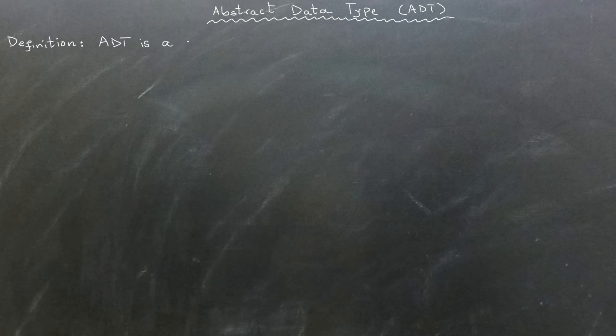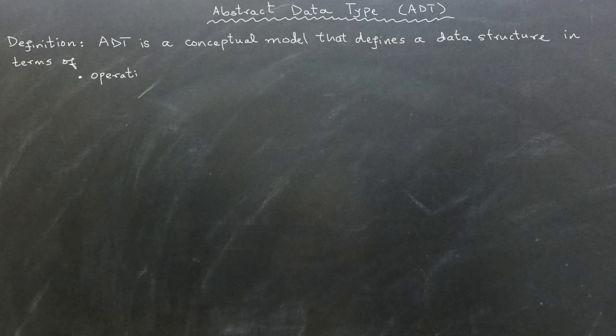In this video, we will learn about Abstract Data Types, also known as ADT. An abstract data type is a conceptual model that defines a data structure in terms of its operations and characteristics, while hiding or abstracting the underlying implementation details.